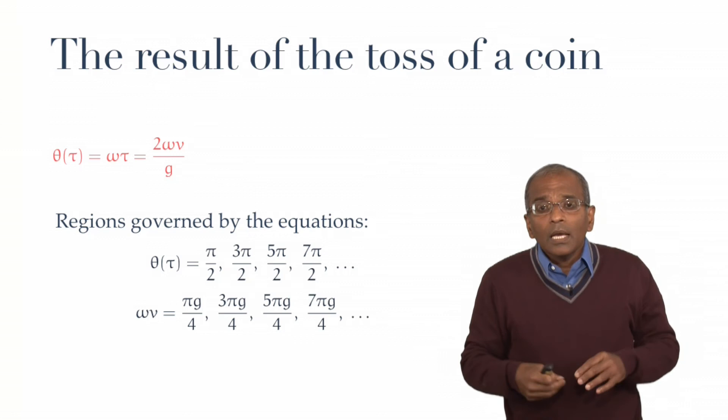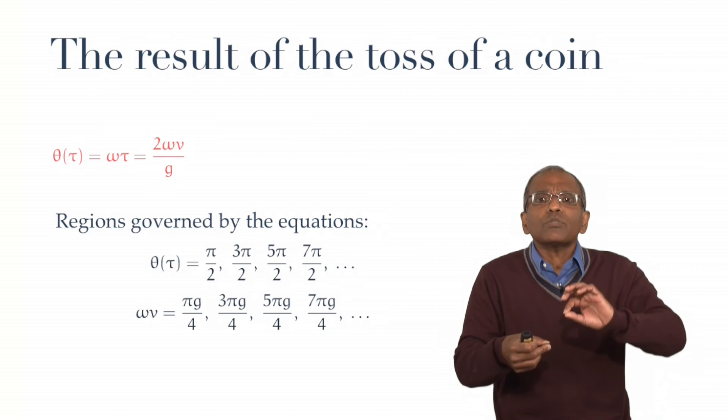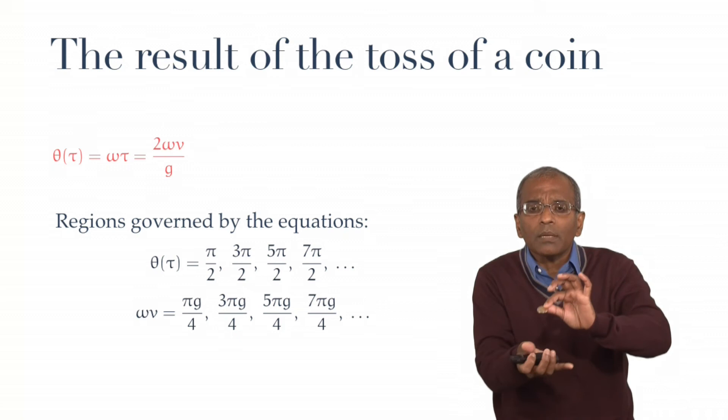If, likewise, you toss the coin very slowly, so it doesn't go very far, but you toss it with a high angular velocity, well, the coin will not have much time to spin before it is caught again. And therefore, you will still get a head.